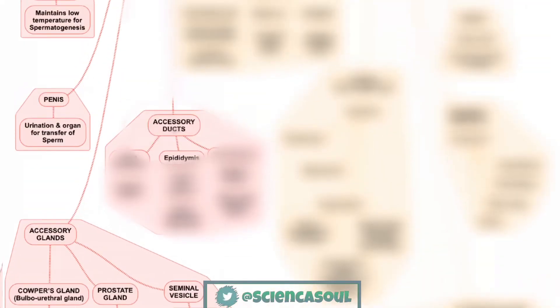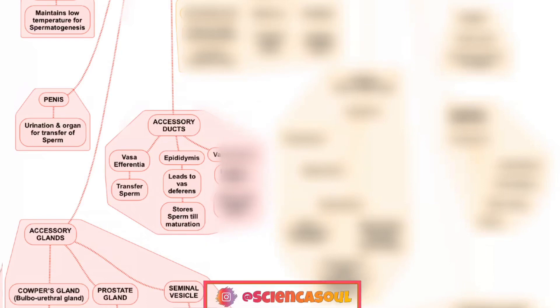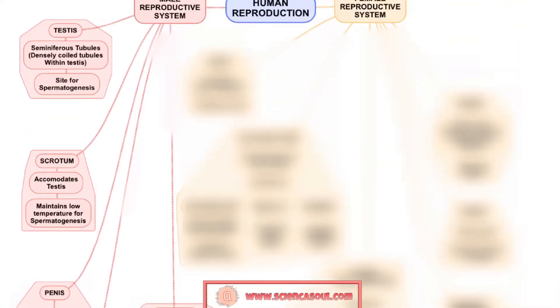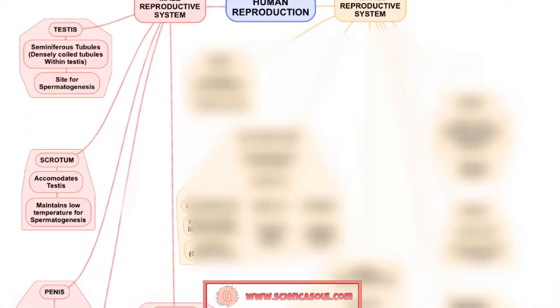The next part is accessory ducts. First is the vas deferentia, which transfers sperm. Second is the epididymis, which leads to the vas deferens and stores sperm till maturation. Third is the vas deferens, which leads to the urethra and stores and transports sperm. This completes the parts of the male reproductive system.